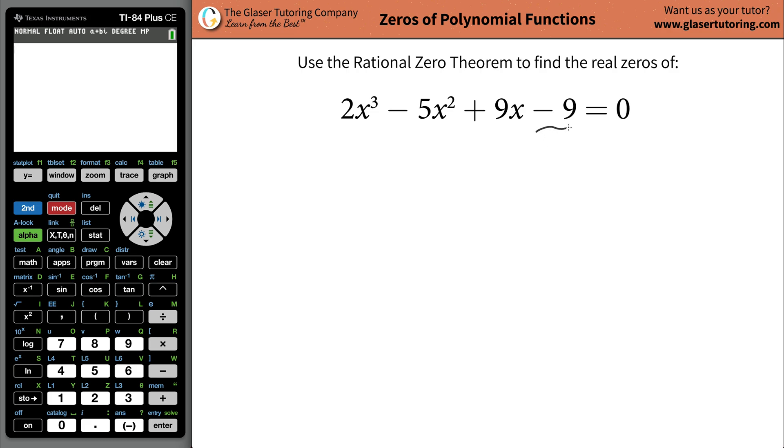If you take the factors of your constant term, call them p, and you take the factors of your leading coefficient (the coefficient in front of the highest power of x), call them q, then you take those factors p, divide them by q, and this will give you the list of possible real zeros. This doesn't mean that they will be zeros, and it doesn't mean this is an all-inclusive list. There can be other zeros, but this will give us an idea of what might be possible.